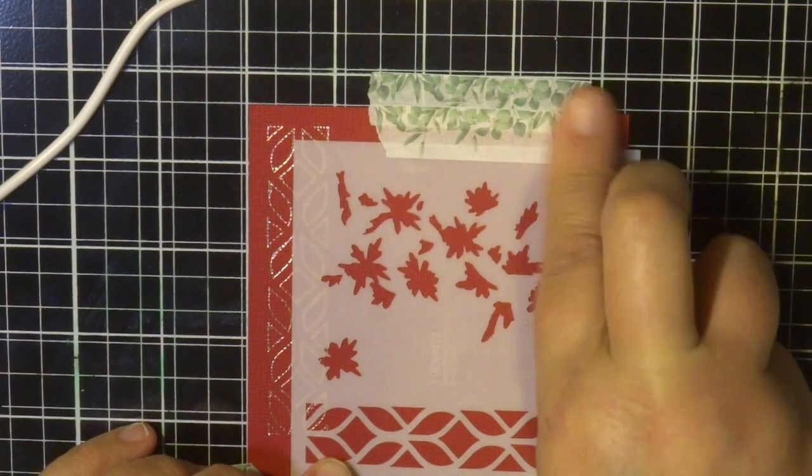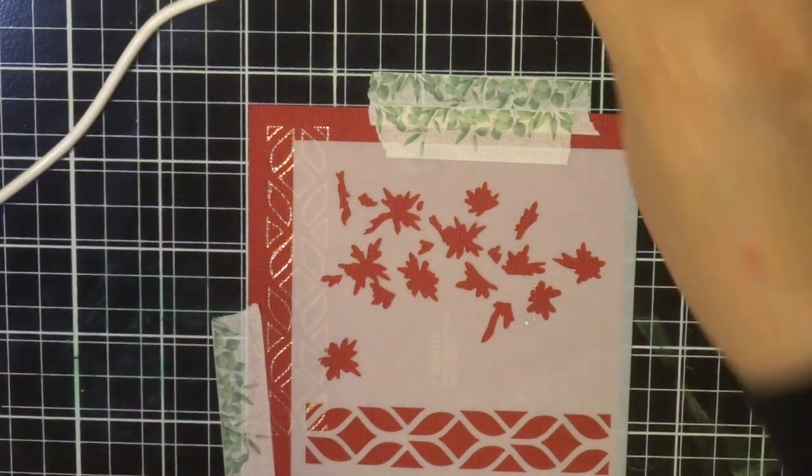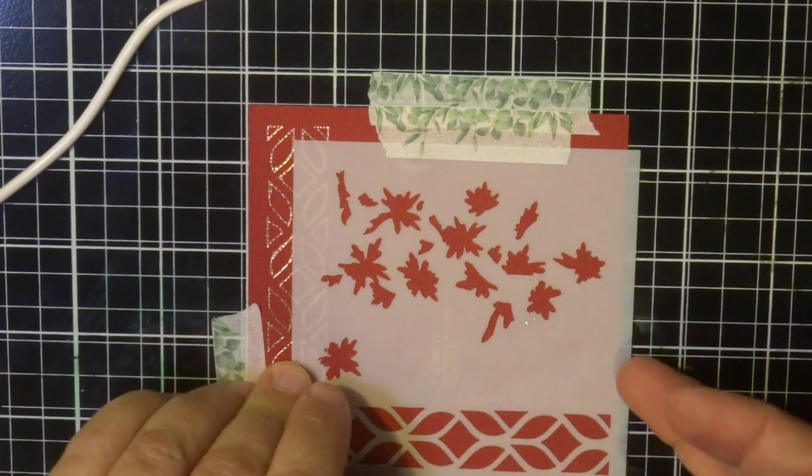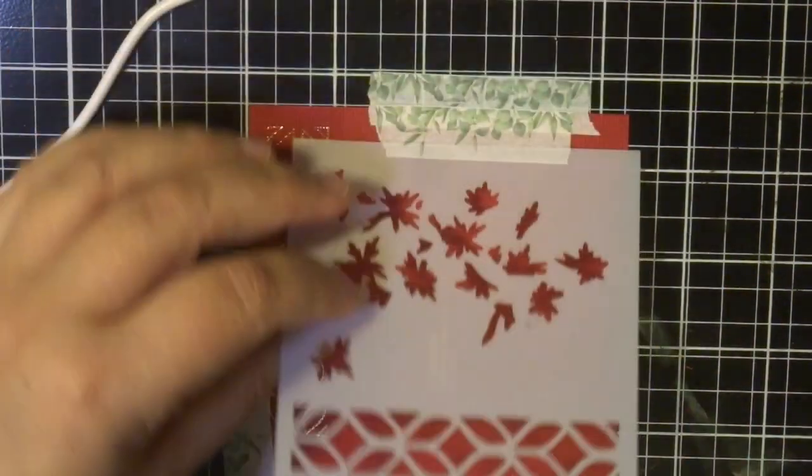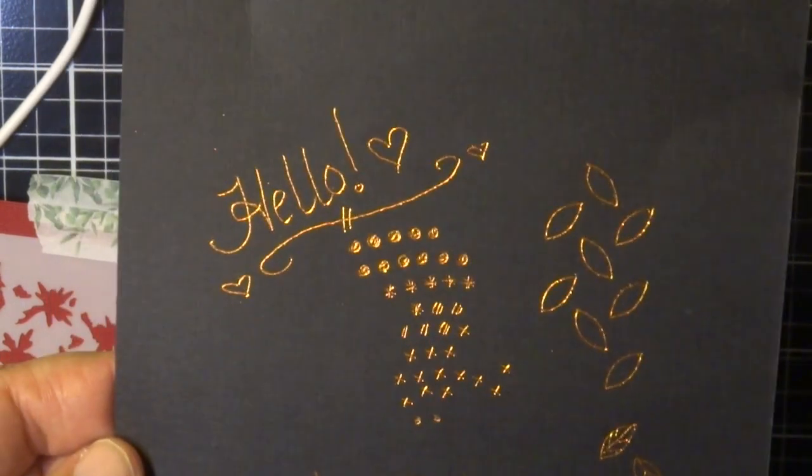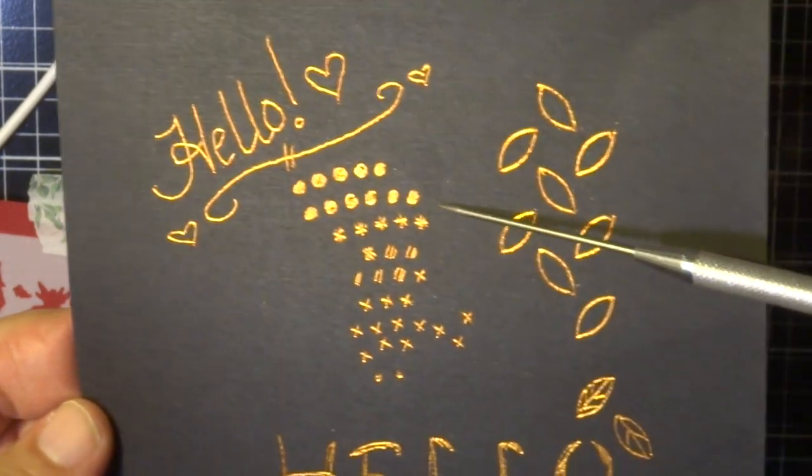So that's just one way of using the hot foil pen. The hot foil pen comes with four nibs. There is a fine one. I've used the fine one with my stencils. And also there's a standard nib, a bold nib and also calligraphy nib.